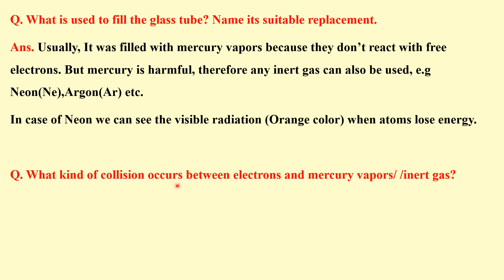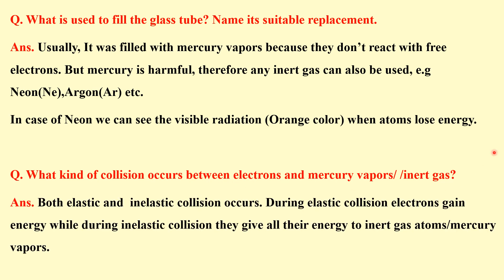What kind of collision occurs between electrons and mercury atoms or inert gas atoms? Both elastic and inelastic collisions occur. During elastic collisions electrons gain energy, while during inelastic collisions they give all their energy to the inert gas atoms or mercury vapors.